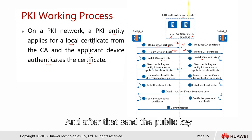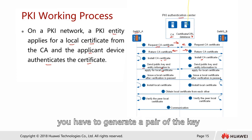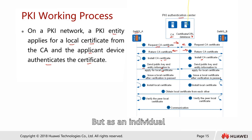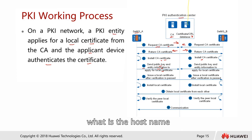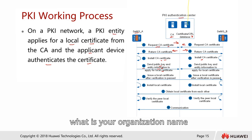And after that, send the public key and also the entity information to apply for the certificate. Step number four basically means you have to generate a pair of keys — remember, we mentioned about the public and the private key. As an individual, you only need to send the public key, together with information about the hostname, how many years you want to apply for the cert, what is your organization name, which department, and so on.